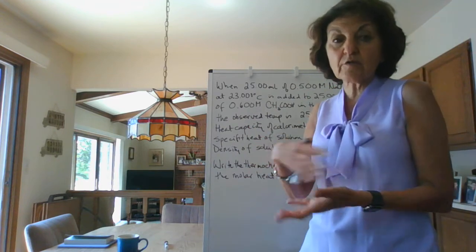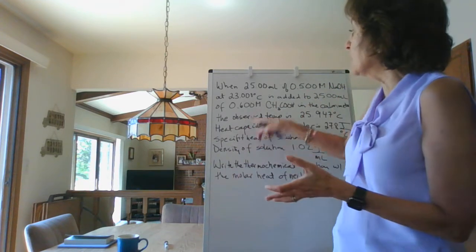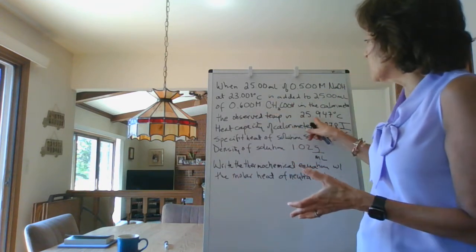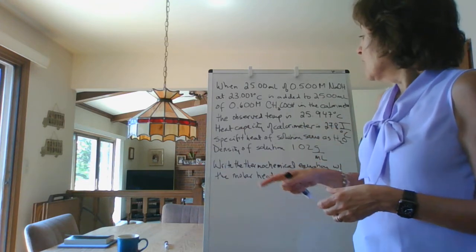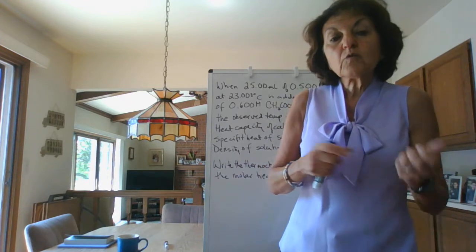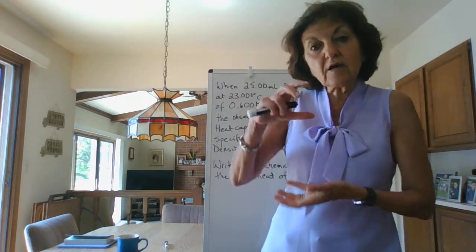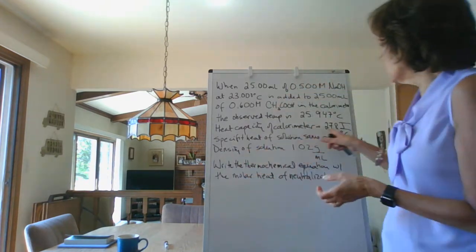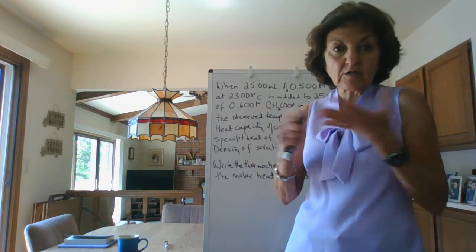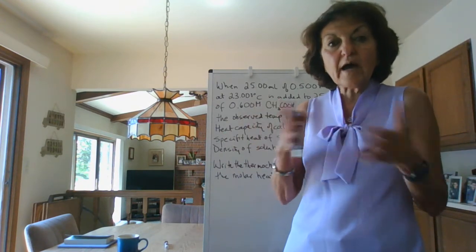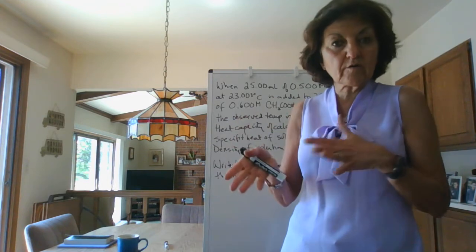The observed temperature ends up being 25.947. In another experiment, we figured out the heat capacity of that coffee cup calorimeter to be 27.8 joules per degree Celsius. Remember how I told you in the previous video how you can figure that out with hot water and cold water?